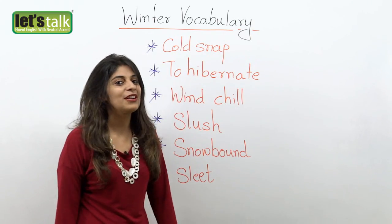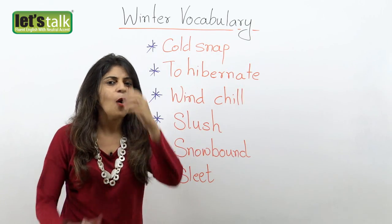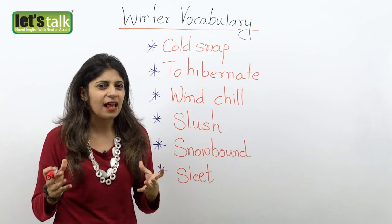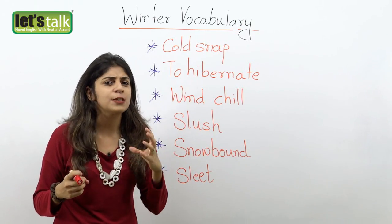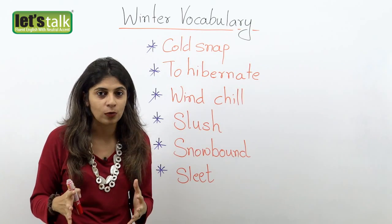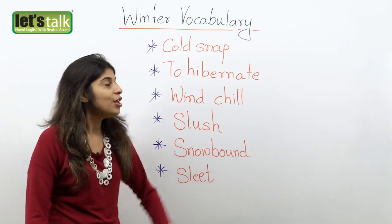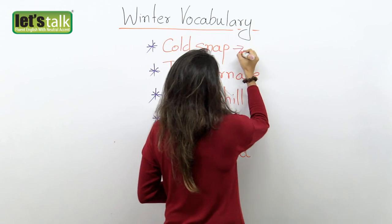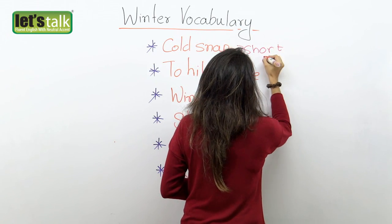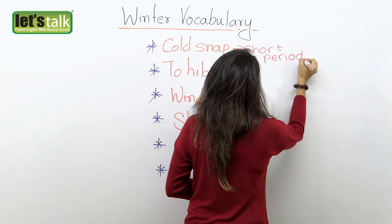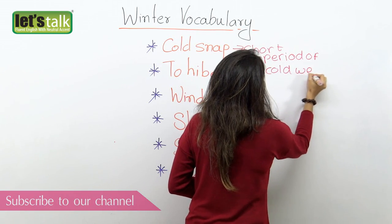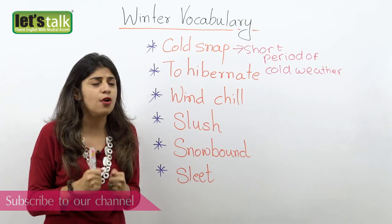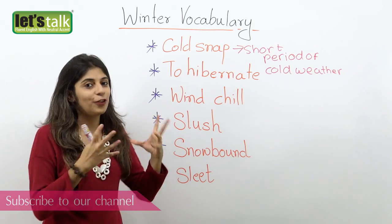The first word that we have over here is a cold snap. What is a cold snap? You know, at times when the weather is really nice and pleasant, but suddenly for a few days or for a short period, the weather really gets very cold — it is so chilly outside. So that short period is called a cold snap. It is a short period of cold weather, when it's really cold and it's just a sudden outbreak of the cold weather.